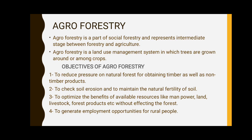The next topic is agroforestry. Agroforestry is a part of social forestry. It represents the intermediate stage between forestry and agriculture — it is a middle stage combining both. Agroforestry is a land use management system in which trees are grown around and among crops. So agroforestry is a combination of agriculture and forestry.